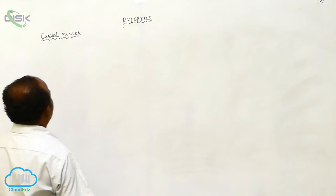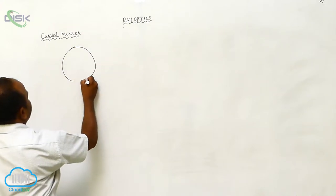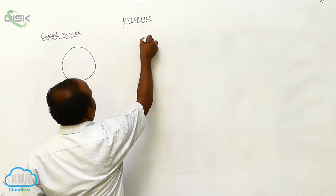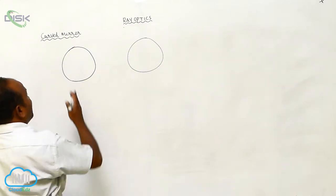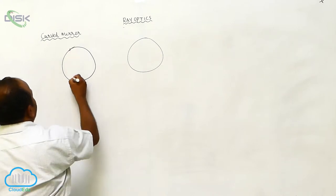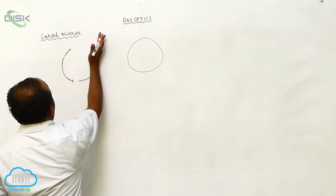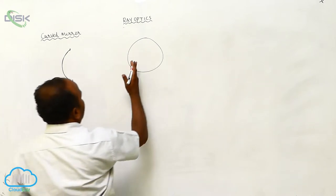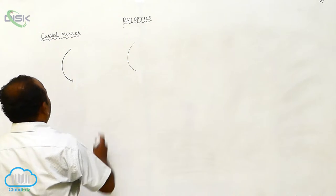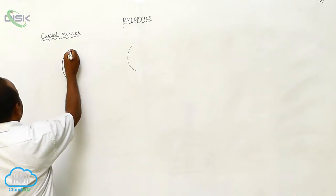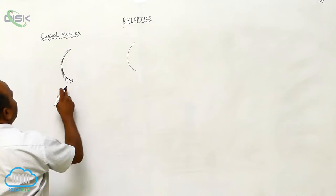This is a hollow sphere. This is the portion of a transparent hollow sphere — only a portion of the transparent hollow sphere. One side is polished, and the other side is coated with opaque paint. This is called a curved mirror.